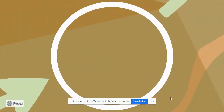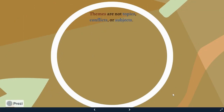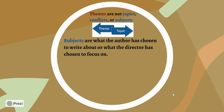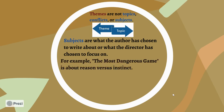The main idea here is that themes are not topics, conflicts, or subjects. So good versus evil is not a theme — that's a conflict. Love is just a topic or a subject. This is a crucial idea. Subjects are what the author has chosen to write about, or what the director has chosen to focus on. For example, 'The Most Dangerous Game' is about reason versus instinct — that's a pretty accurate idea of what it's about, but that's not a theme.